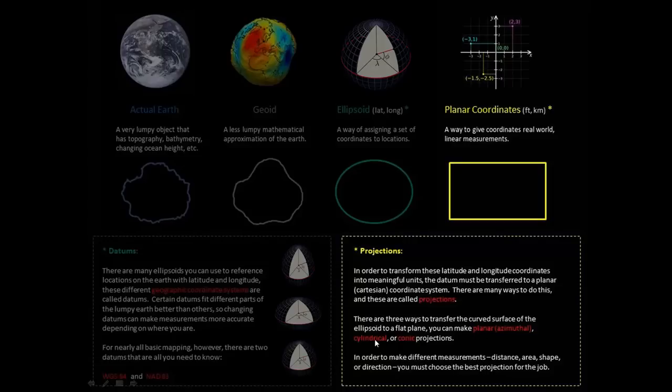And there are three types. You can use a plane, a cylinder, or a cone. Planar, also called azimuthal, cylindrical or conic projections. All are versions of how do we get this curved surface to a plane.